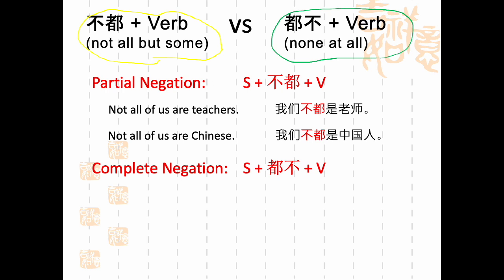Let's now look at the complete negation. Here the 不 follows the 都. Let's practice. 中文怎么说？None of them are students. You would say 他们都不是学生 — literally: they all are not students.